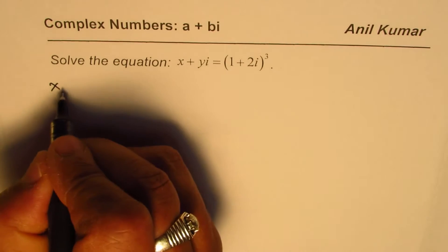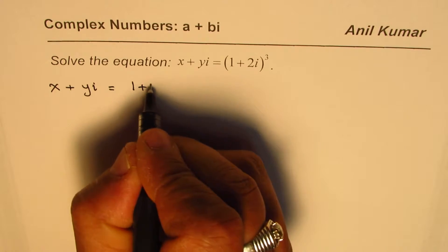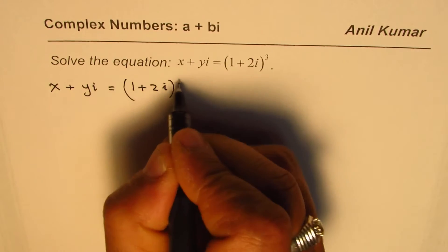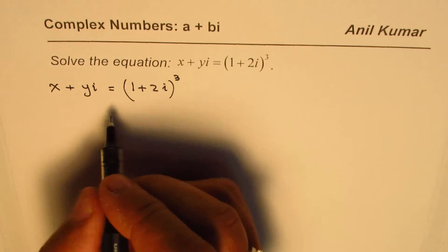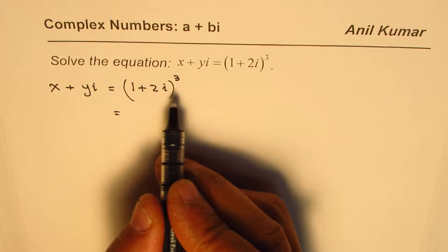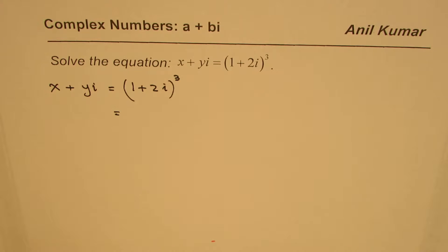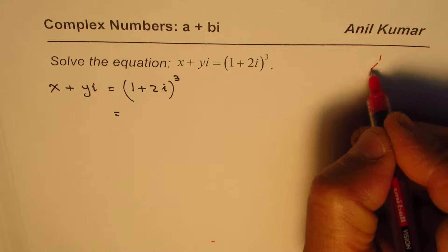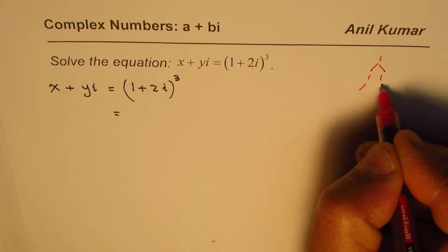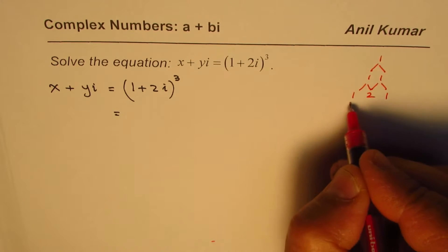By expanding the right side we have x plus yi equals (1 plus 2i)³. You could expand this by multiplying (1 plus 2i) by (1 plus 2i) times (1 plus 2i). You could also expand it using Pascal's triangle if you remember, which is a pattern like this - keep on adding the previous two to get the next one.